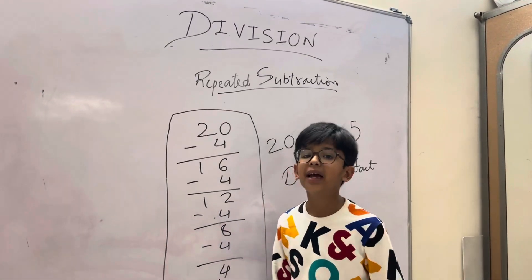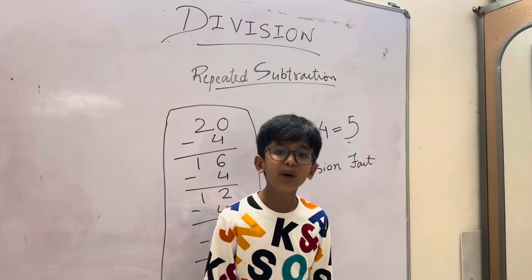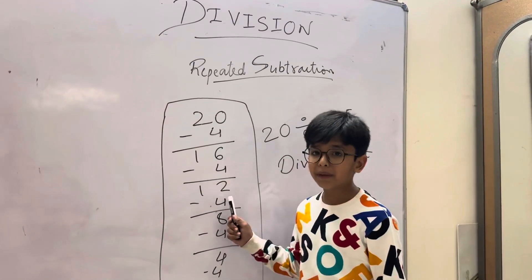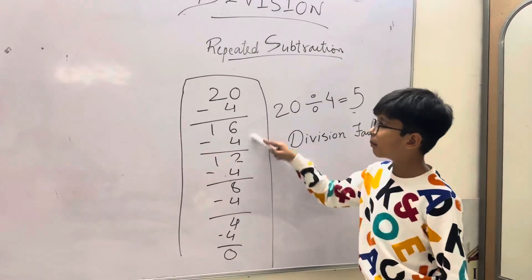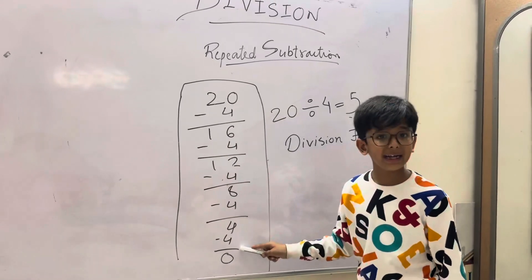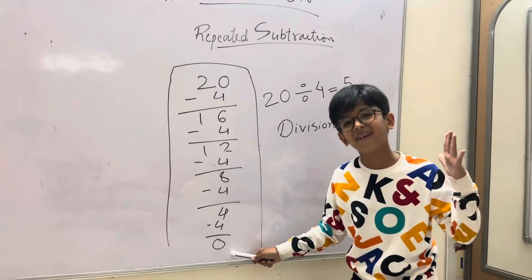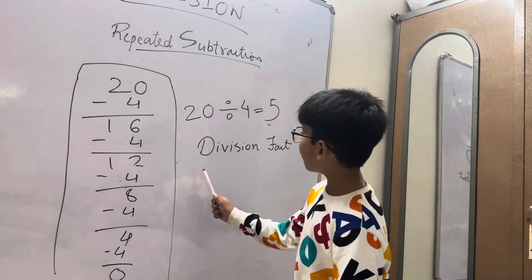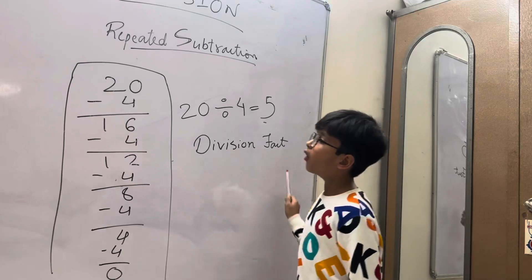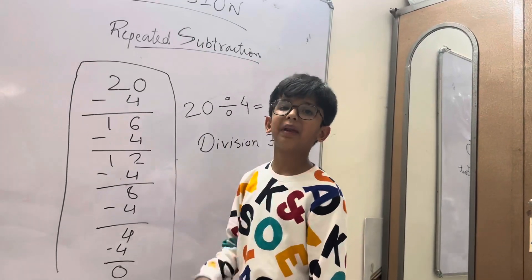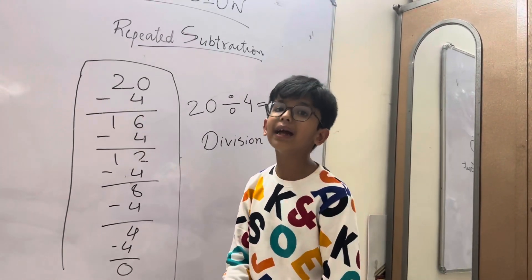Repeated subtraction is one of the methods to carry out division. It subtracts equal number of items from the regular number till nothing is left. Now we have to obtain division fact from this repeated subtraction. So first, we have to see the regular number.